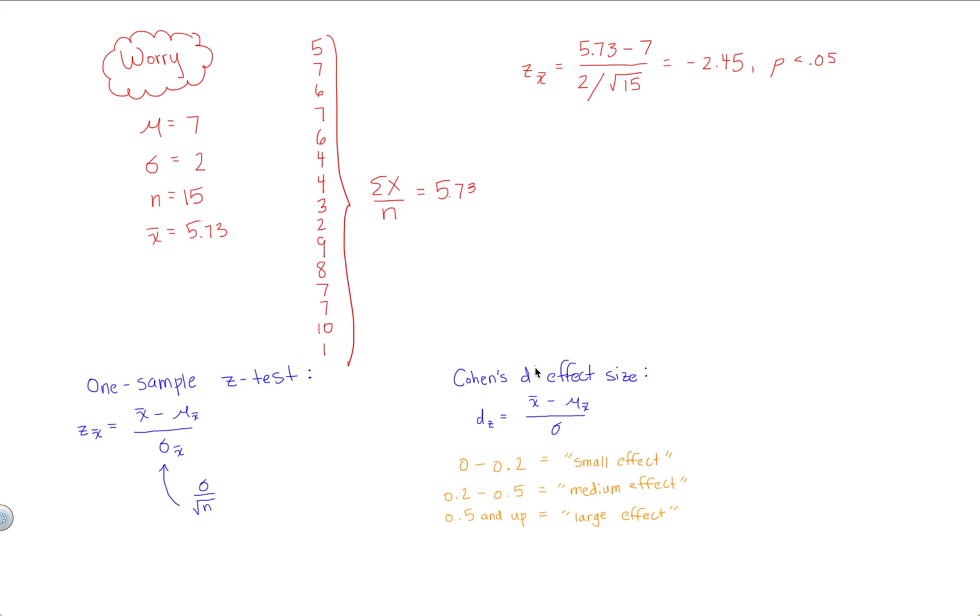But now let's do the effect size to see how large or small that effect is. So here, d sub z equals, again, same numerator, 5.73 minus 7, divided by just 2. You don't need to do the square root of 15. Just stick your standard deviation there in the denominator, and you're done.